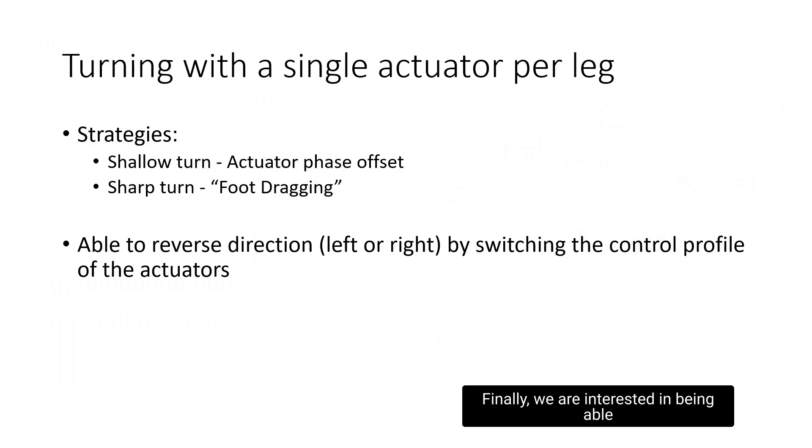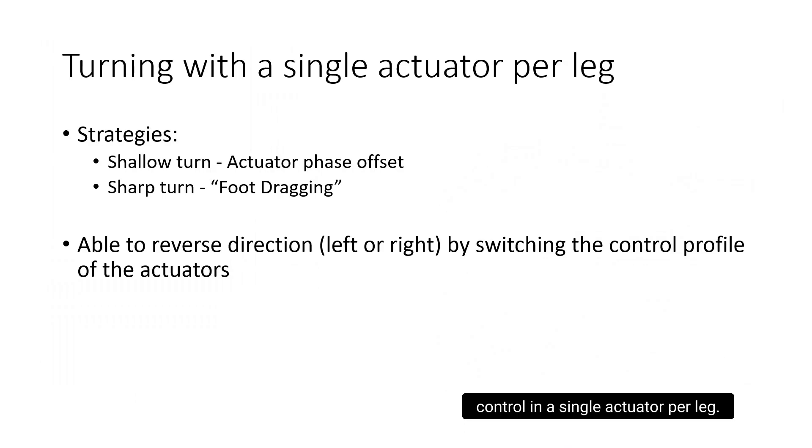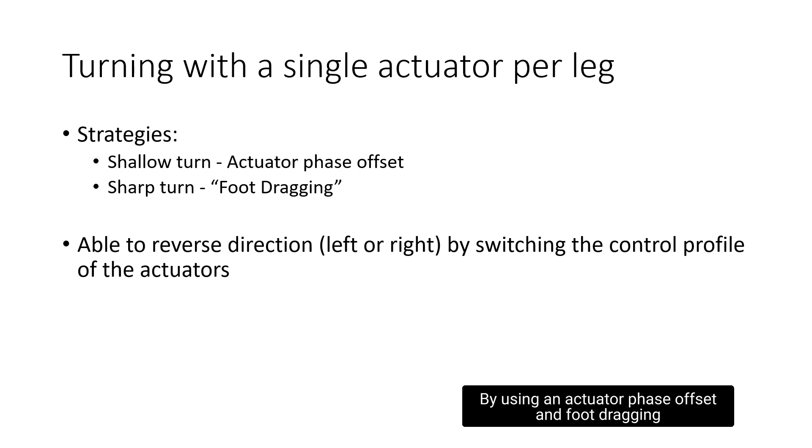Finally, we are interested in being able to turn our robot without any feedback control and a single actuator per leg. By using an actuator phase offset and a foot-dragging technique where one actuator is turned off, we are able to achieve both shallow and sharp turns. To change the direction of the turn, we simply switch the controls of the actuators.